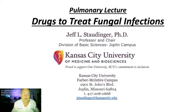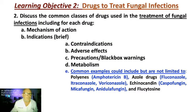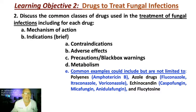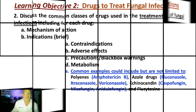This is Drugs to Treat Fungal Infections. My name is Jeff. Let's get started. We will discuss mechanism of action, indications, contraindications, adverse effects, precautions and black box warnings, metabolism — covering amphotericin B, fluconazole, itraconazole, voriconazole, caspofungin, micafungin, and anidulafungin.